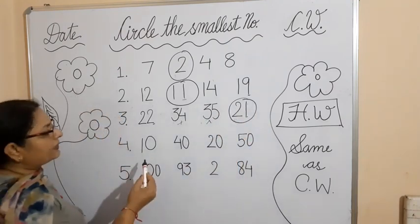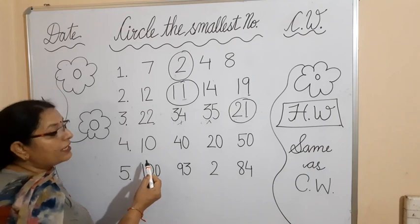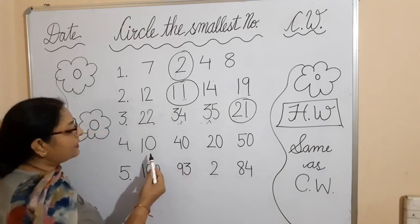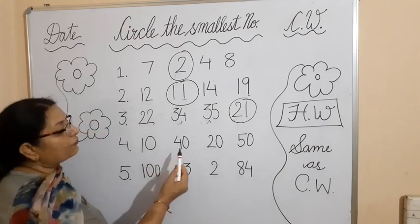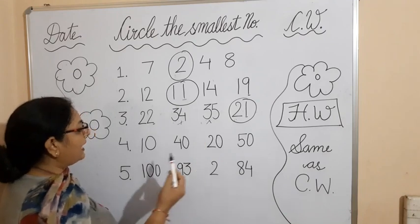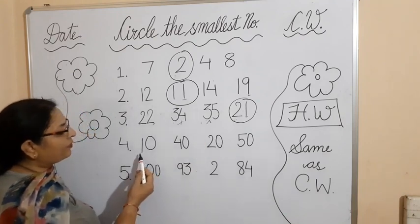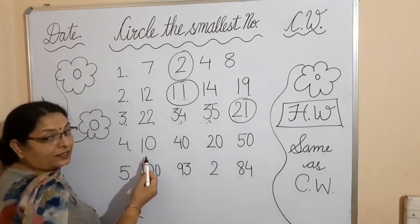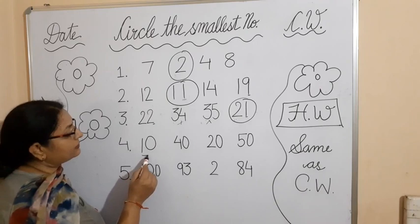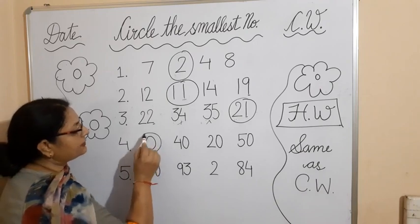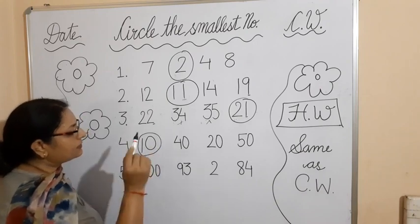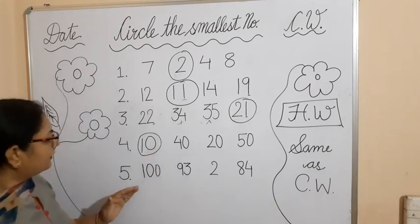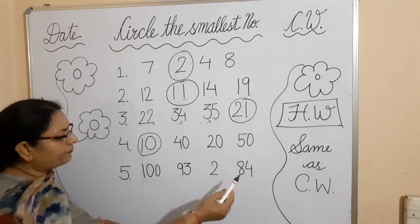For the next example this is very easy. I have written numbers only in the tens: 10, 40, 20, and 50. You know 1 is the smallest tens digit, so 10 is the smallest number. You have to make the circle on 10.